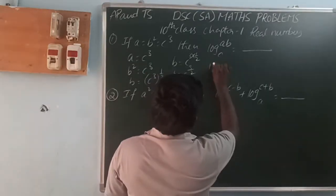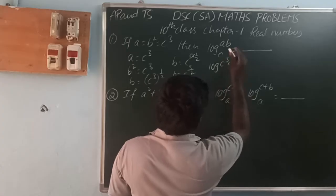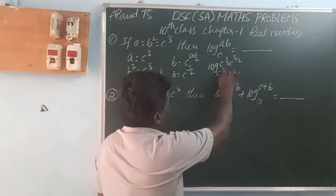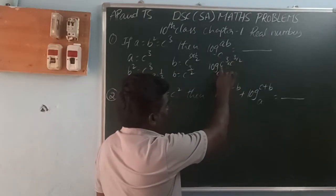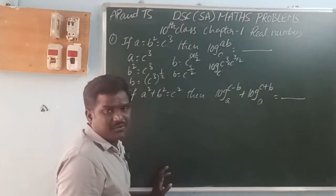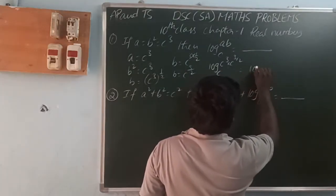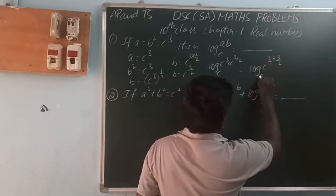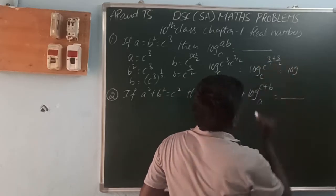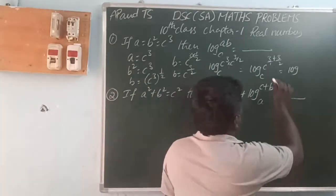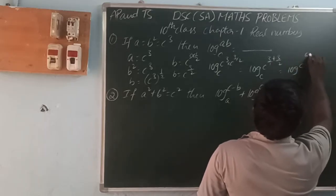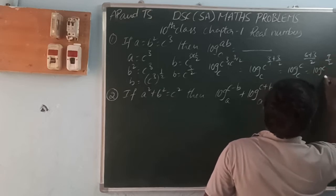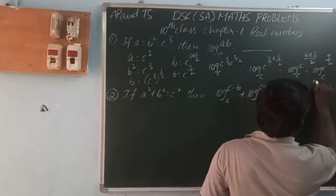So log(ab) base c equals log(c cubed times c to the power 3/2) base c. Using a power m times a power n equals a power m plus n, that equals log c to the power 3 plus 3/2. Cross multiplying: 3 times 2 is 6, plus 3 by 2, giving us log c to the power 9/2 base c. So the answer is 9/2.